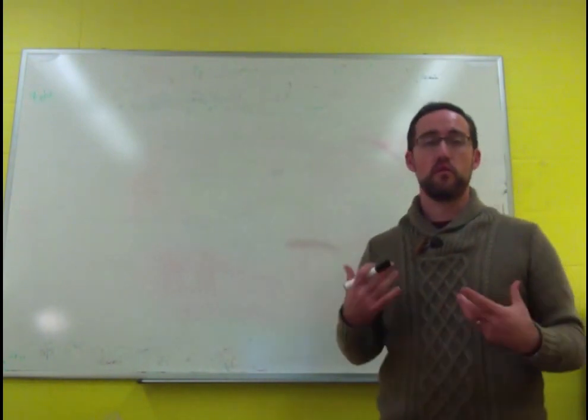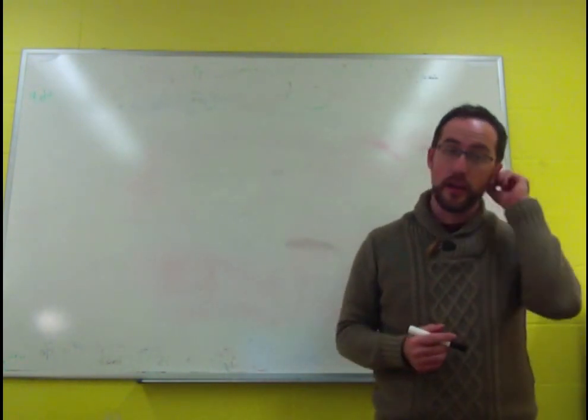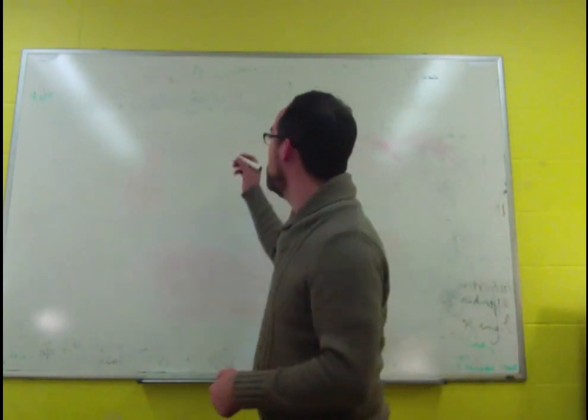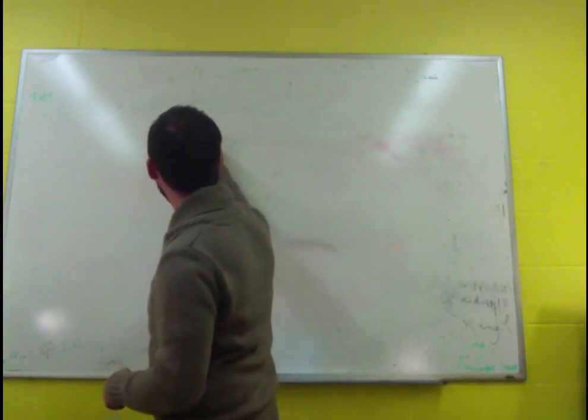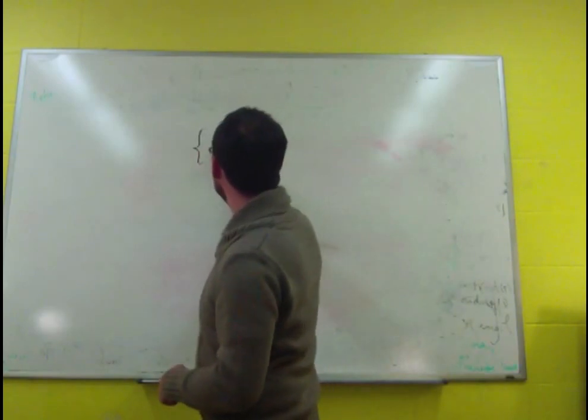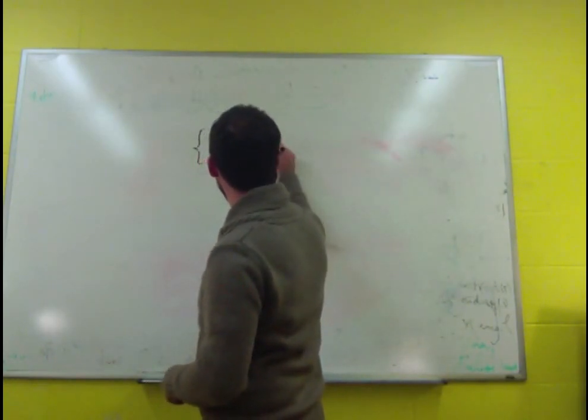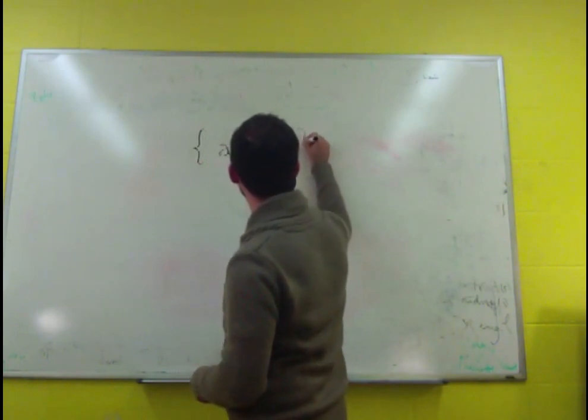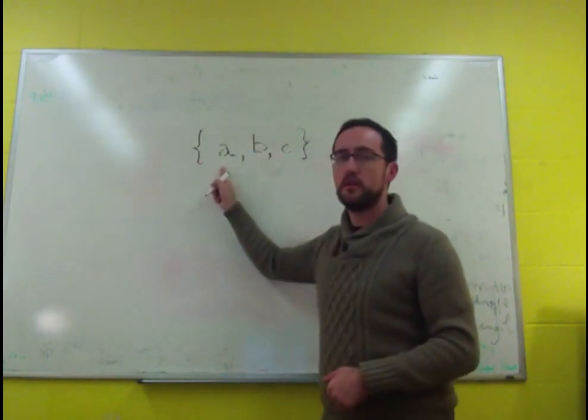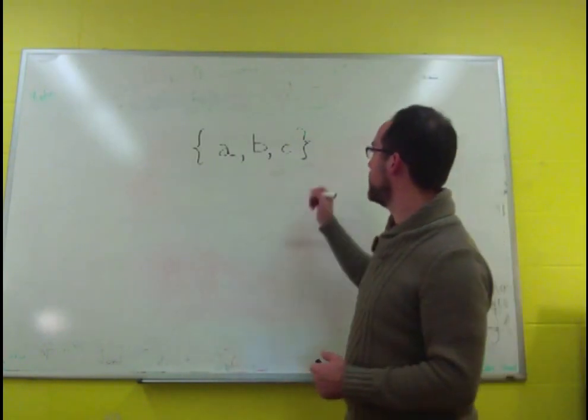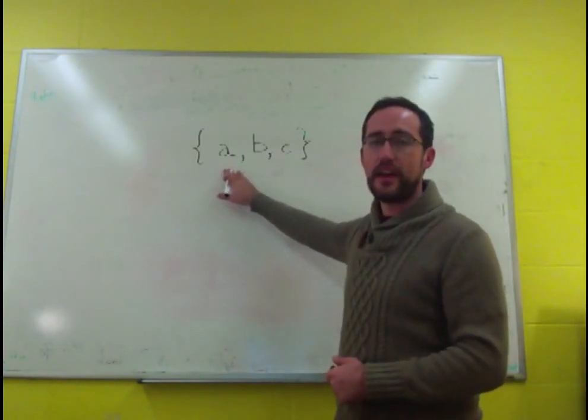A set is typically written in a very particular way so that in a formal sense everyone knows it's a set. We use curly brackets and then inside it we put whatever we want and we separate each one with a comma. Now this is a set. This is the set containing A, B, C.